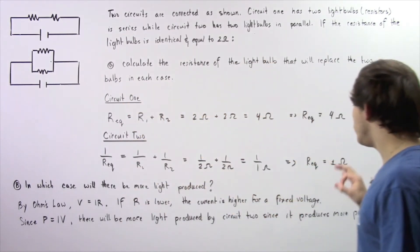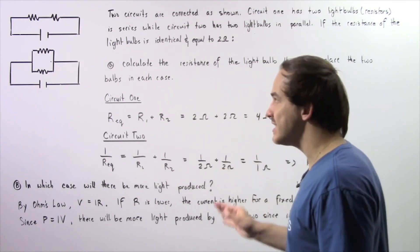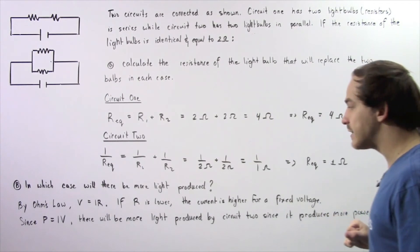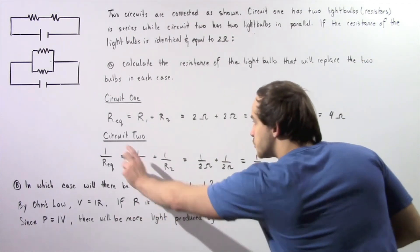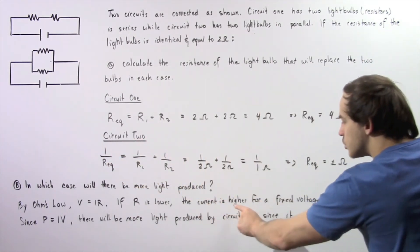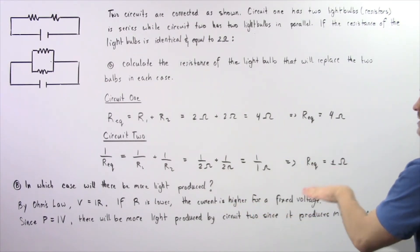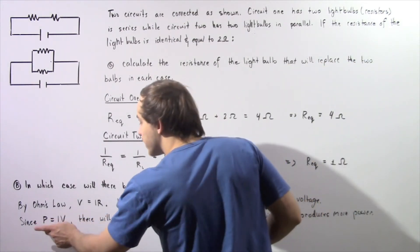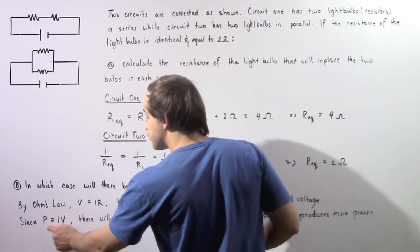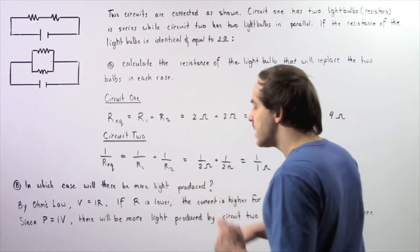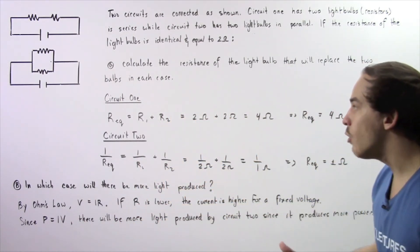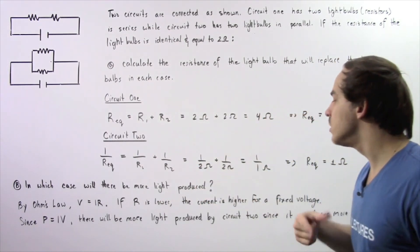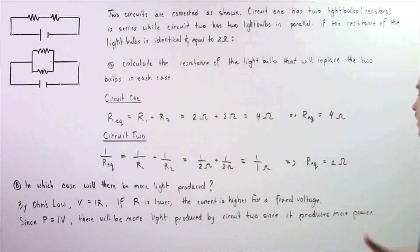From part A, we know the equivalent resistance is smaller for circuit number two than circuit number one. Because R is smaller for the second circuit, the electric current will be higher for the same fixed voltage. Since power equals the product of electric current and voltage, and voltage stays the same, there will be more power produced by electric circuit number two, and therefore more light produced by circuit number two.